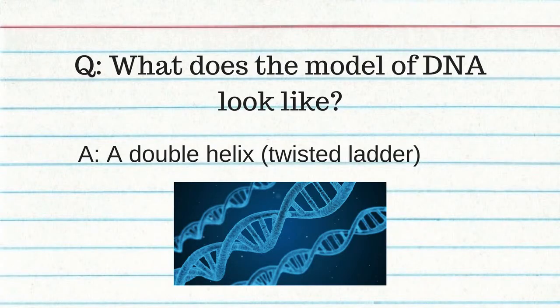Watson and Crick are credited with making the model of DNA, but Rosalind Franklin actually developed it. DNA looks like a double helix — a twisted ladder. The sides of the ladder are alternating sugar and phosphate groups. The rungs are nitrogen base pairs. The two sides are held together by hydrogen bonds between the bases. Chargaff's base pairing rule: adenine goes with thymine and guanine goes with cytosine. The function of DNA: it contains genetic information in a nucleotide sequence, and the DNA code determines the order of amino acids in a protein.